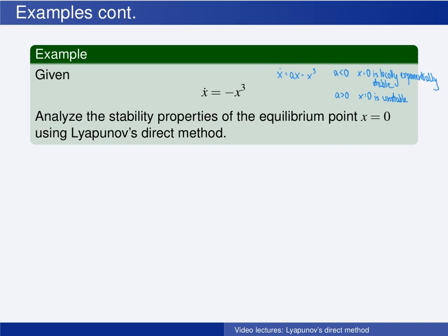For the particular case when a is zero, Lyapunov's indirect method was not able to tell whether the origin is stable or not. Let us see whether Lyapunov's direct method can give better results.